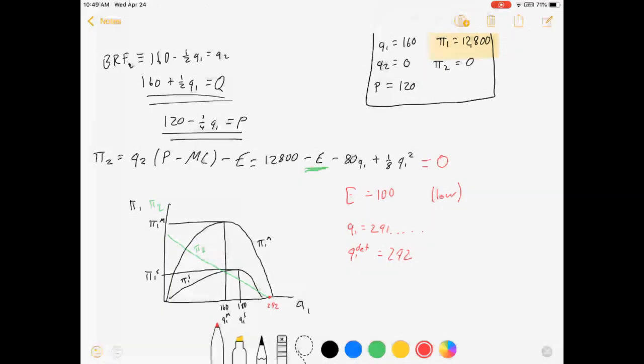If we produce 292 units of the good, it will push firm 2's profits negative. But if we produce that much, the price falls a lot because we've flooded the market with the product. And our profit from deterring is going to be lower than if we had just done Stackelberg. Specifically, our profit for firm 1 from deterring is equal to about 7,008, which is less than the 8,100 that comes from Stackelberg.